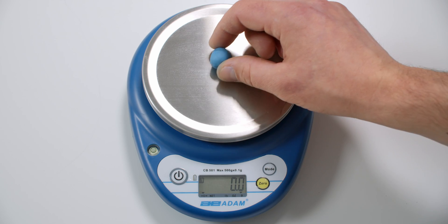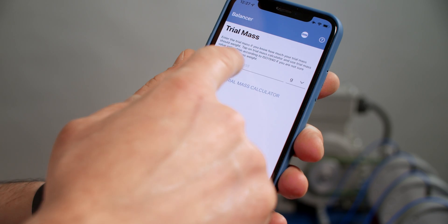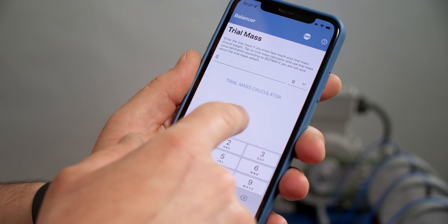Now it's time to prepare trial weight. It has 5 grams and I enter this number into the app.